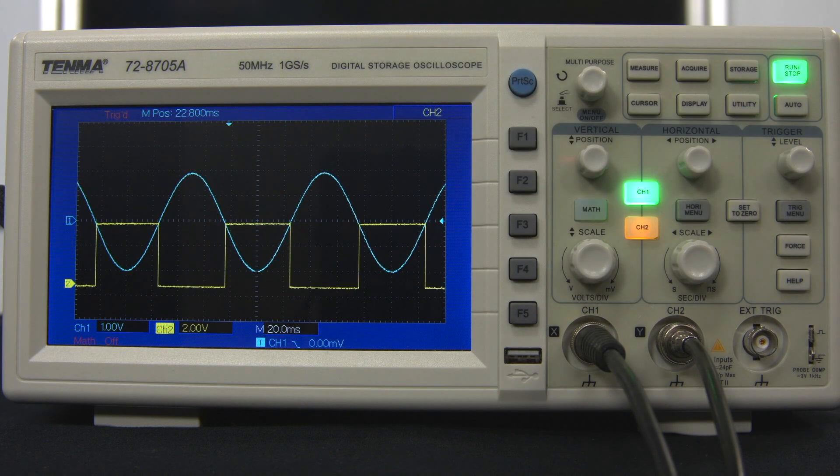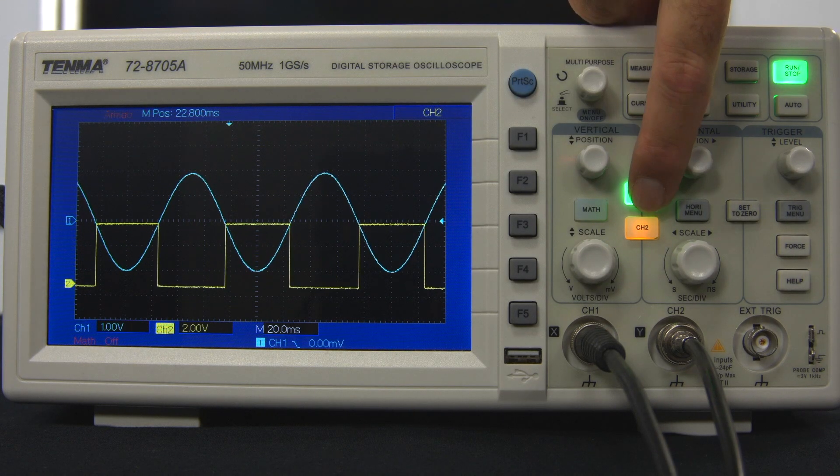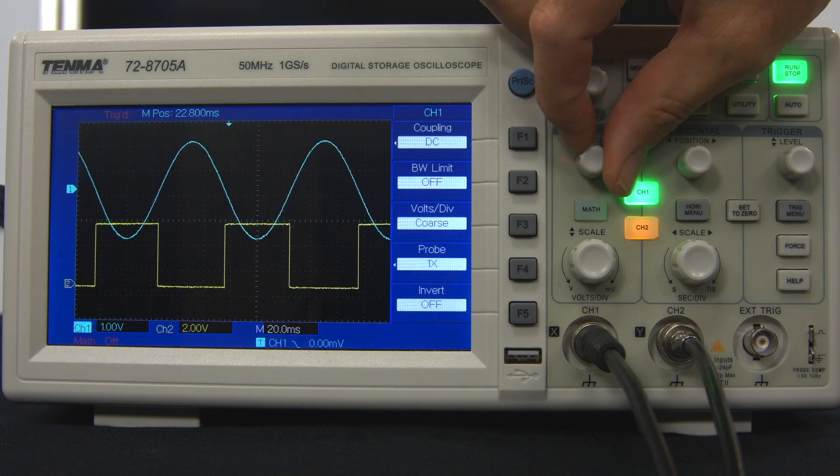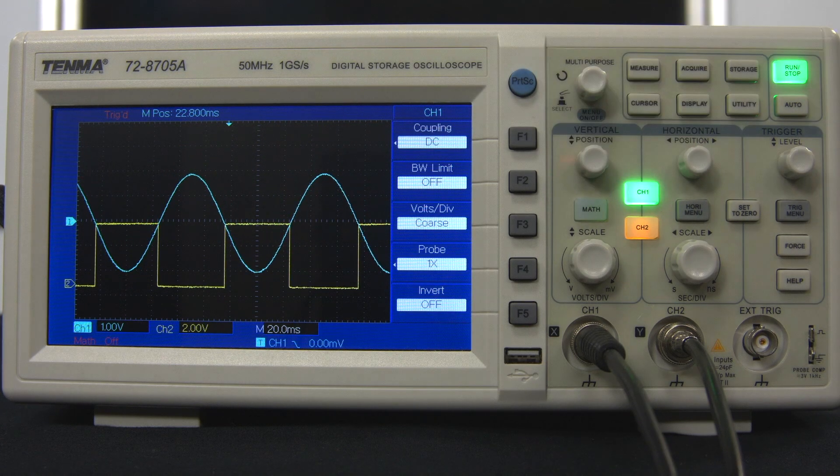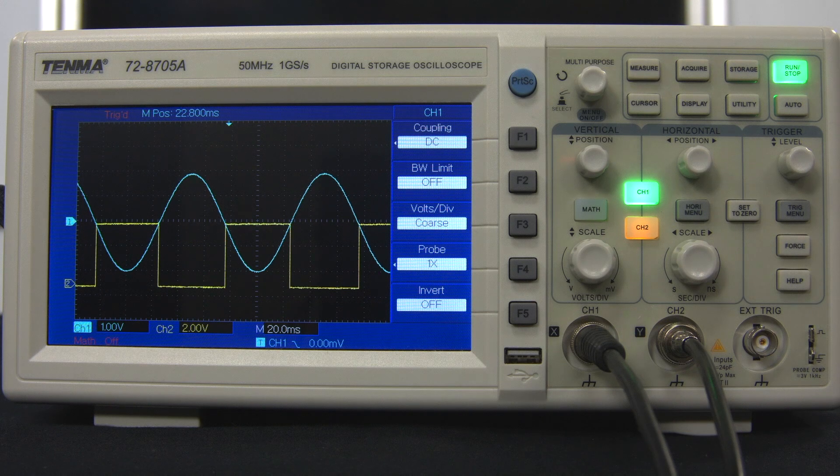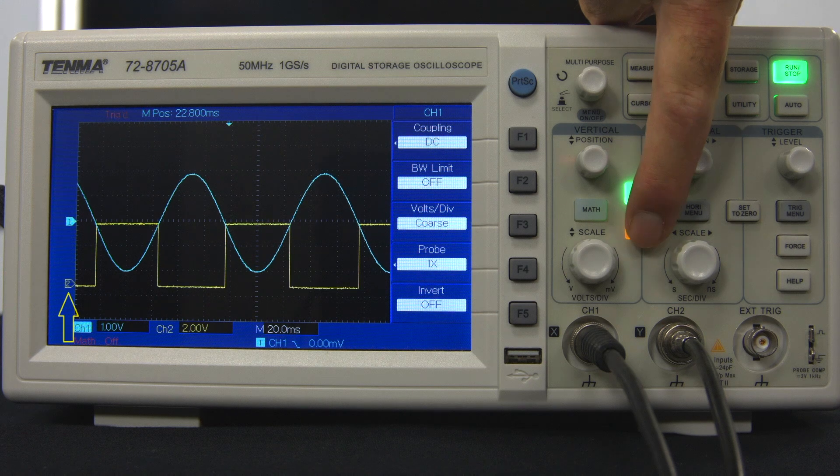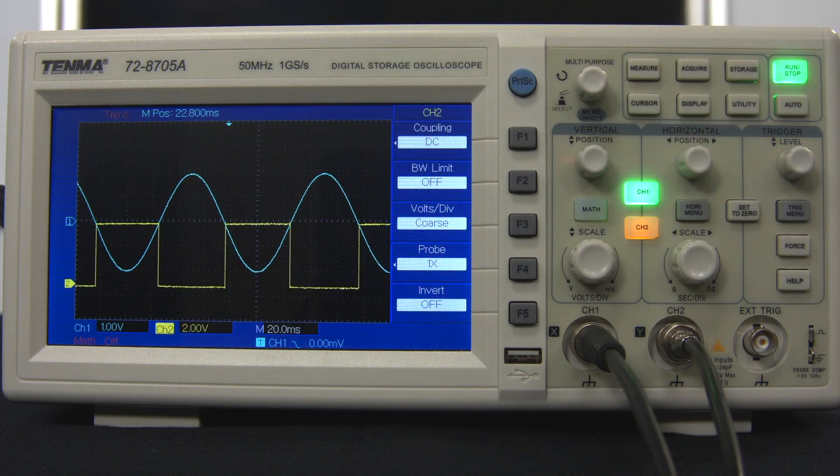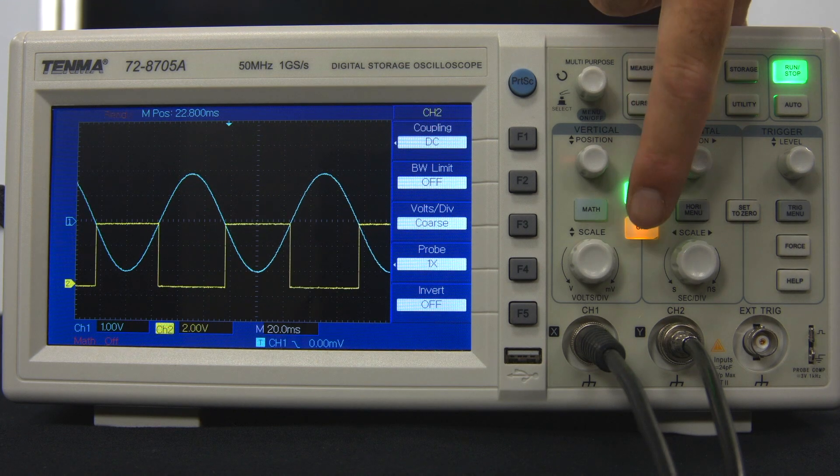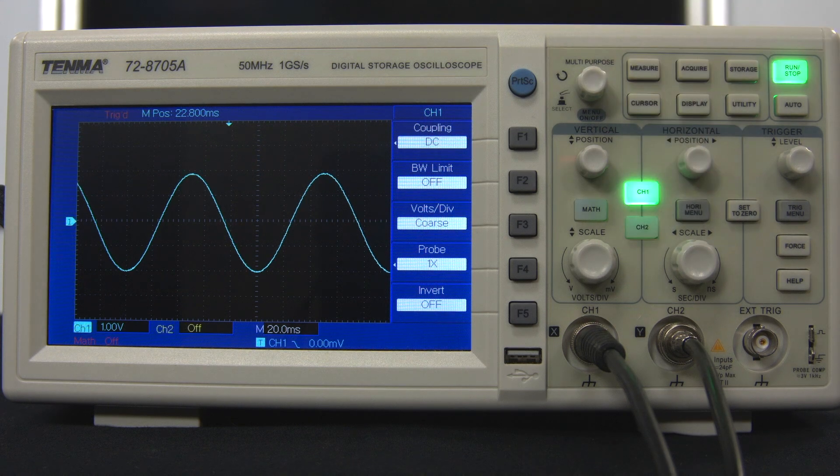If we want to make adjustments again to channel 1, we simply push the channel 1 button to make it the active channel. To turn a channel off, make it the active channel so that its reference number is coloured, so here we might push the channel 2 button, and then press its channel button again to turn it off. Now we only have channel 1 displayed again.